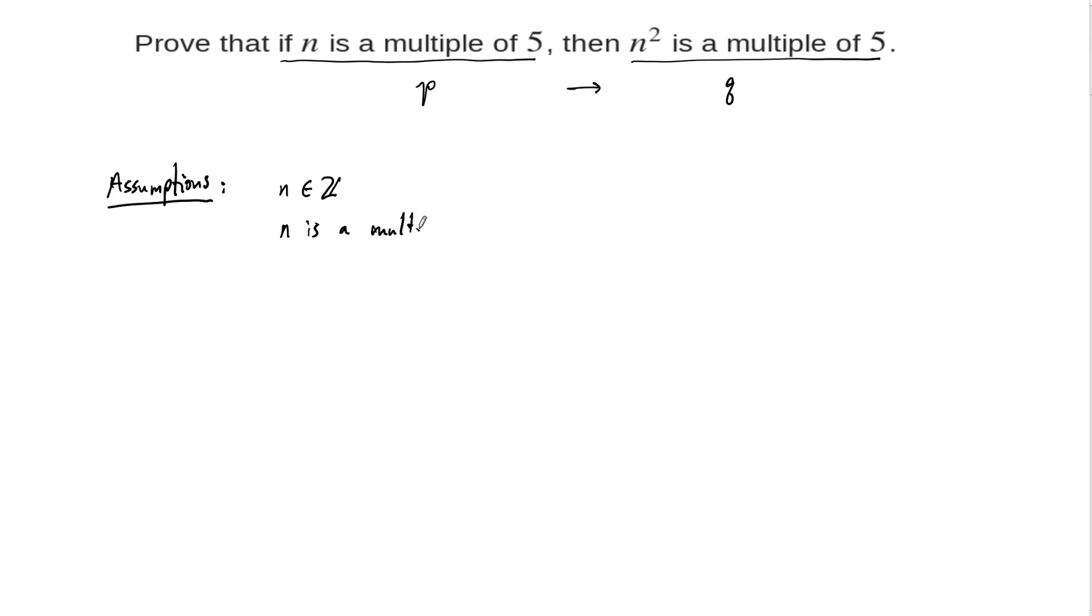So n is a multiple of 5. What does that tell us? Well, that means that there exists an integer K such that n is equal to 5 times K. That's what it means to be a multiple of 5, that n is equal to 5 times something.